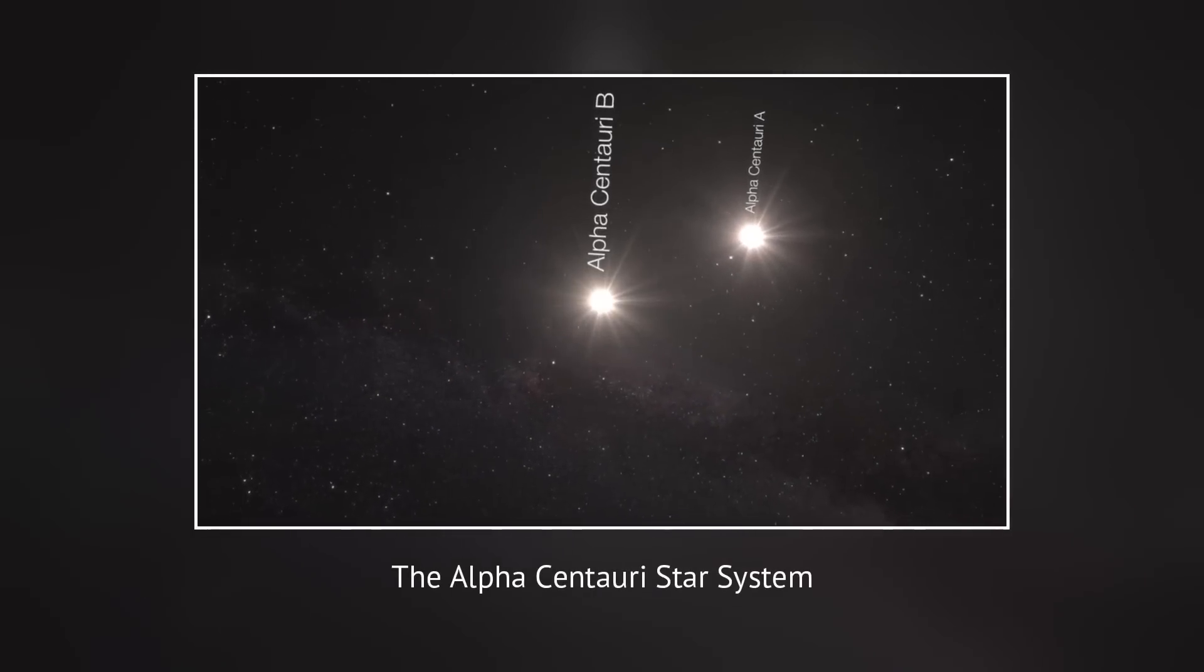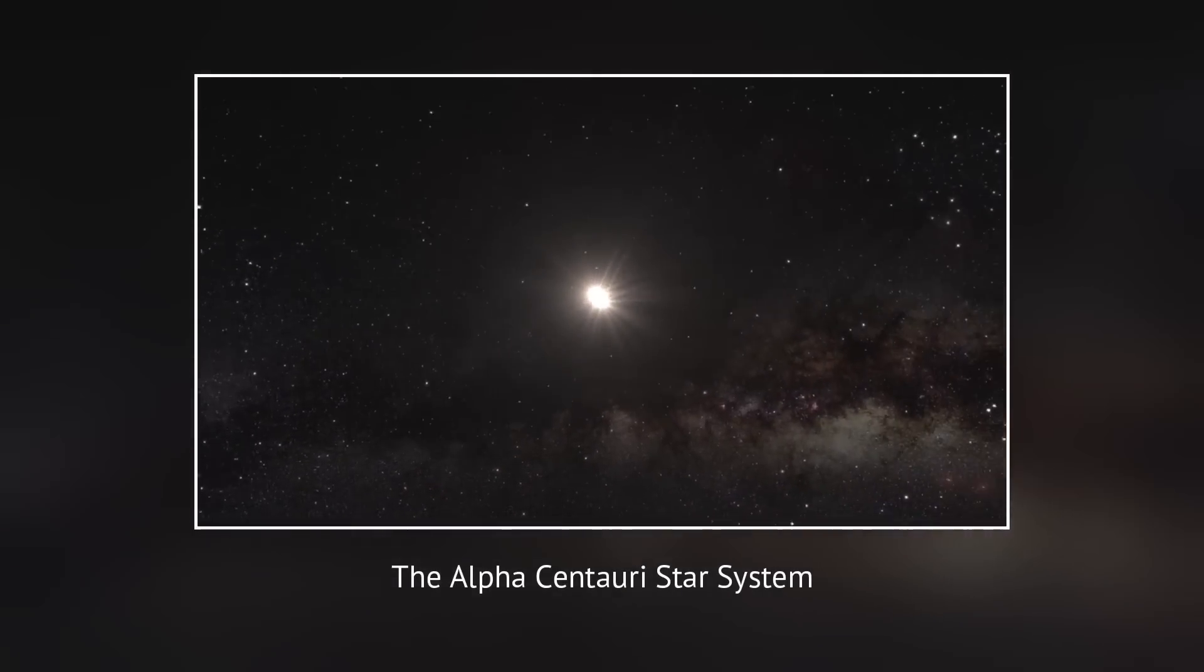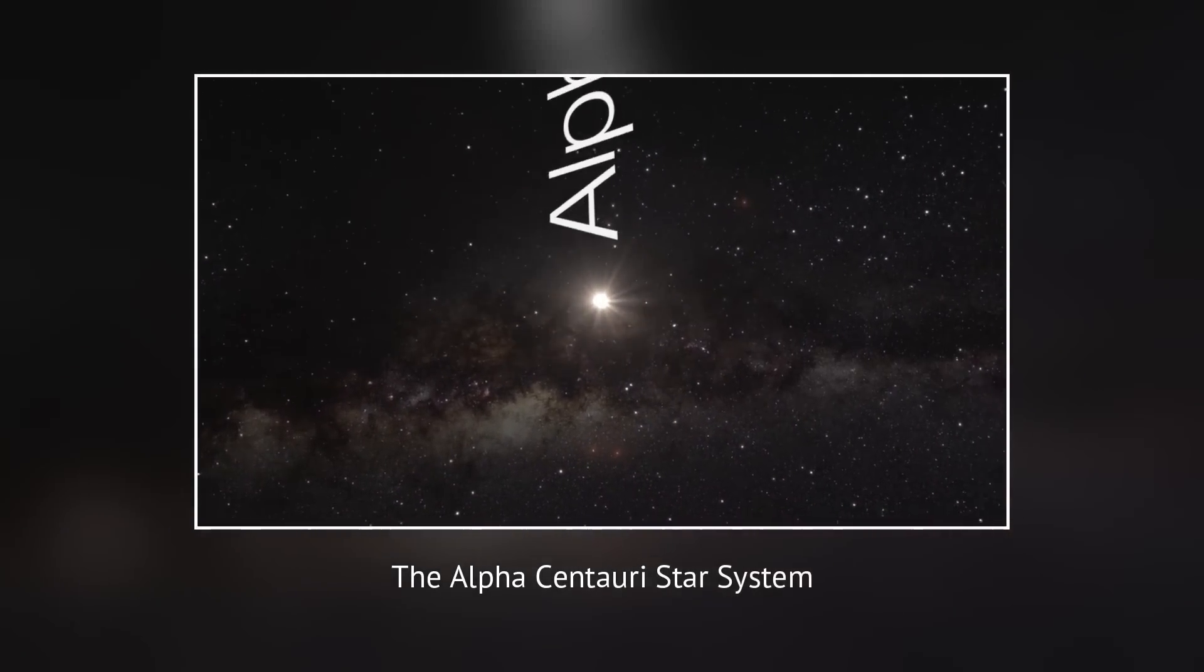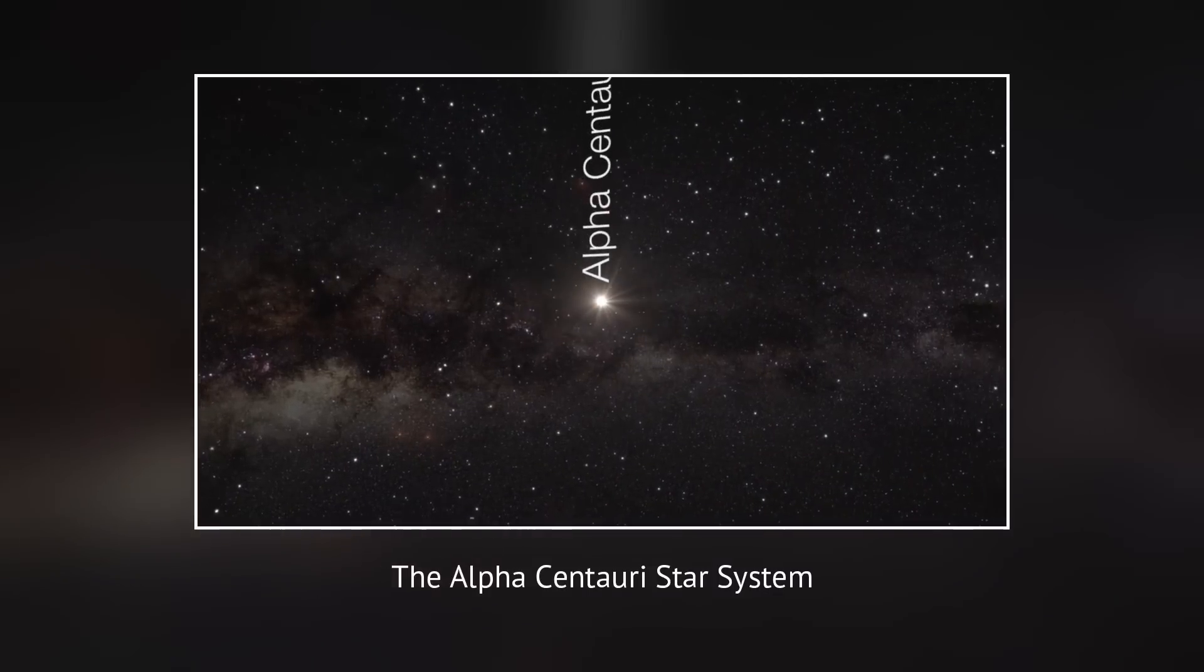The Alpha Centauri star system consists of three stars, Alpha Centauri A and B, locked in a binary dance, and Proxima Centauri, a faint red dwarf.